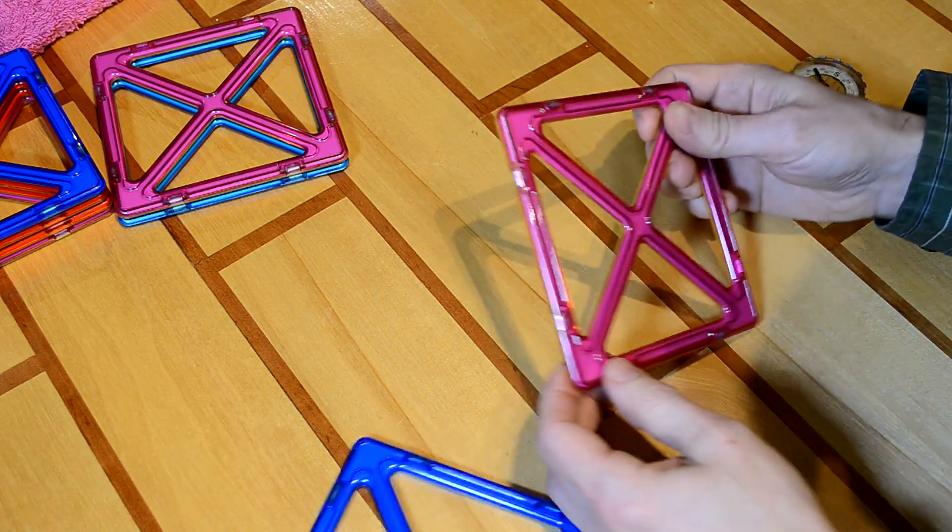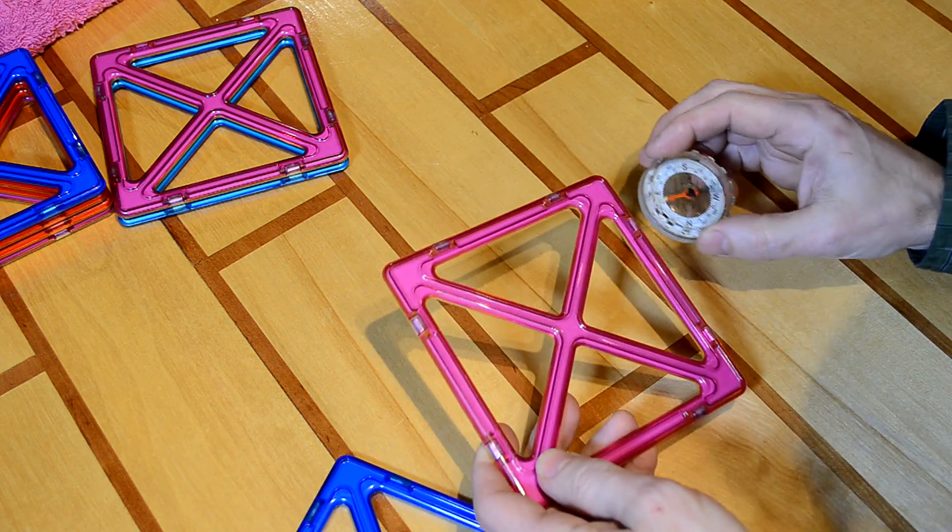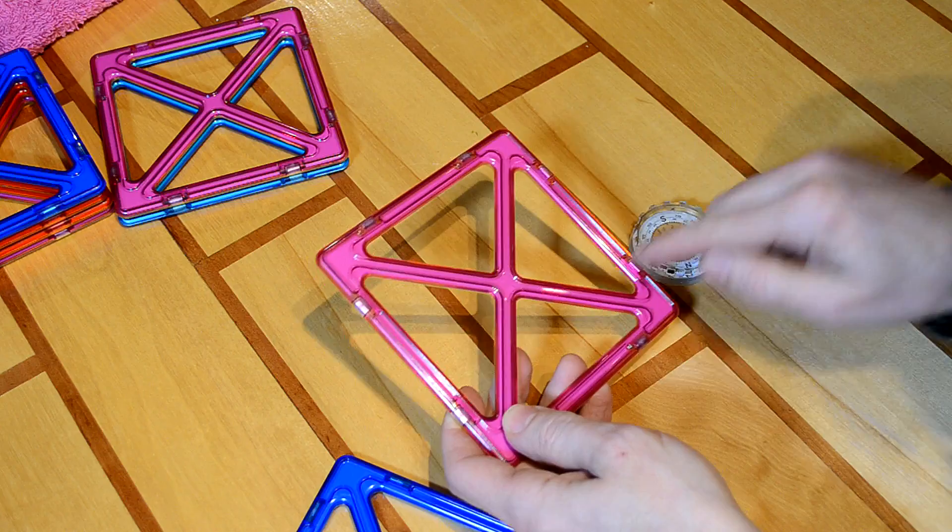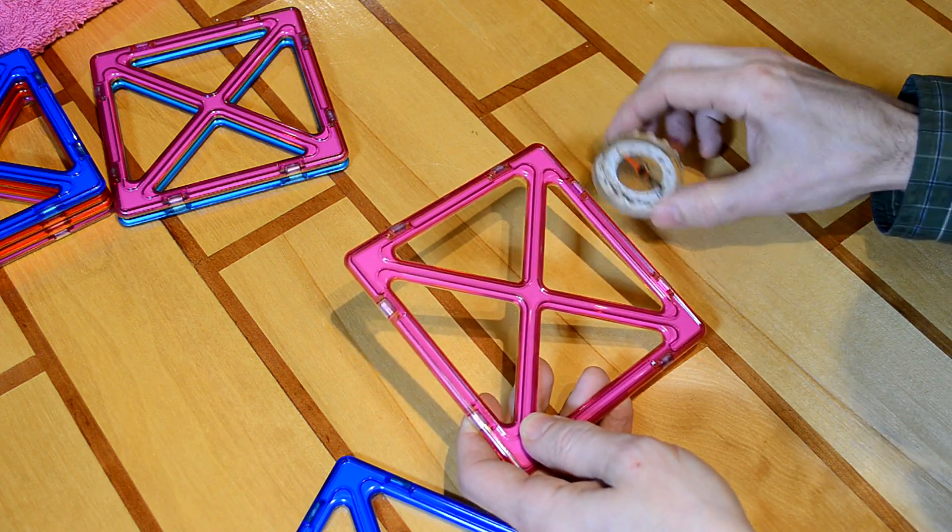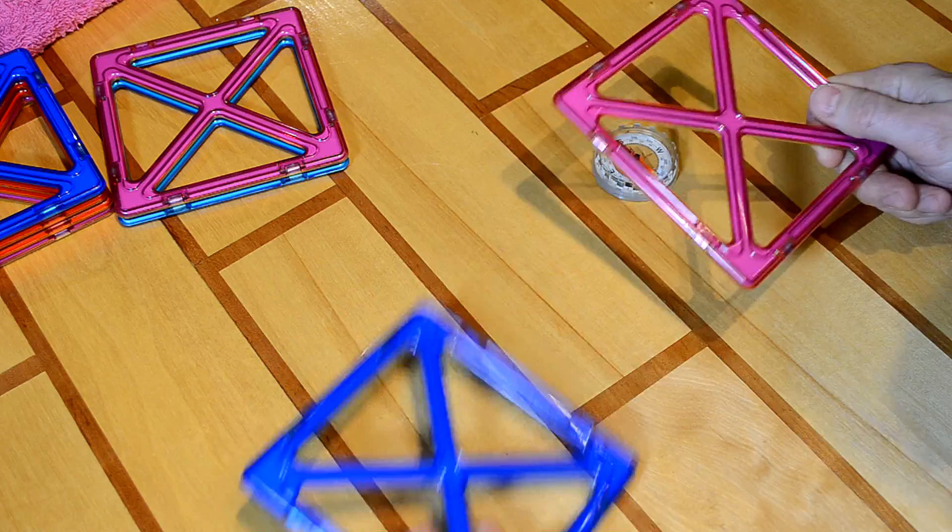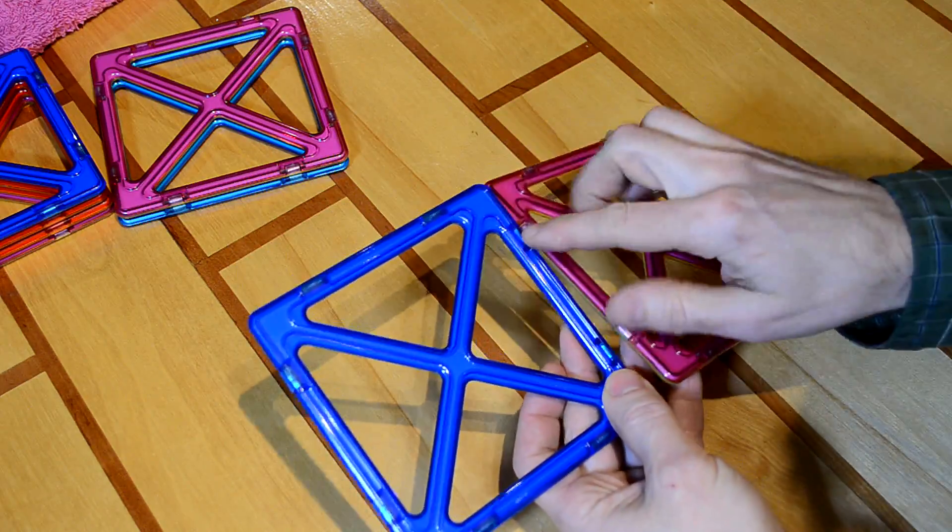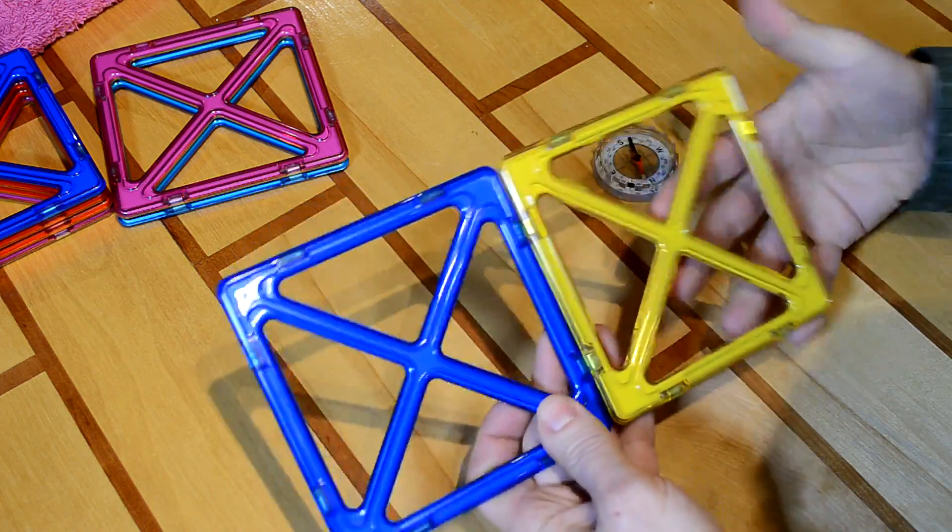The way they get around the magnet polarity issues is the magnets in here are actually oriented side to side, not this way, and they're in there loosely, which is why they rattle. And that way, they can just orient themselves to whatever is next to them.